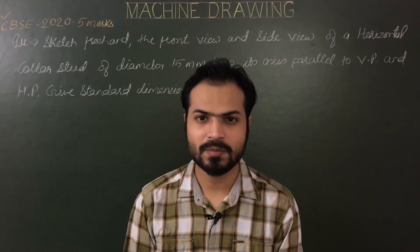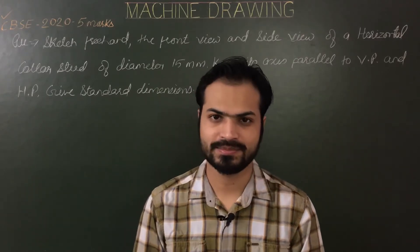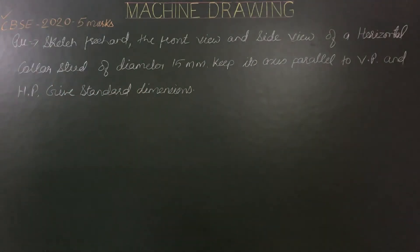Hello everyone, after plane and square stud, let's see how to draw collar stud. The problem under consideration is from the latest question paper of class 12 CBSE year 2020 for five marks. Sketch freehand the front view and side view of a horizontal collar stud of diameter 15 mm. Keep its axis parallel to VP and HP. Give standard dimensions.